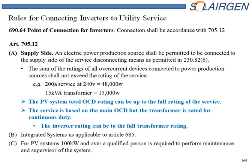First, let's look at the supply side, the utility side, line side connection. Whenever we're connecting into the utility side of the service, we can go up to the full capacity, 100%. The service states that the service size cannot be exceeded by 100% of the overcurrent device. So we'll have to look at the inverter overcurrent device capacity when we're looking at the service — that's the actual overcurrent device in the system.